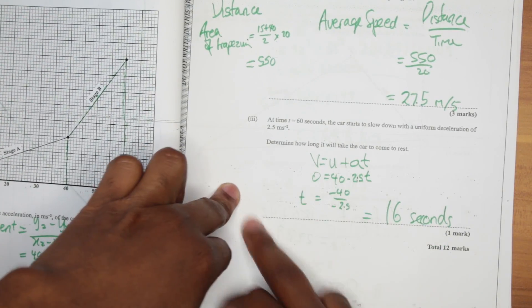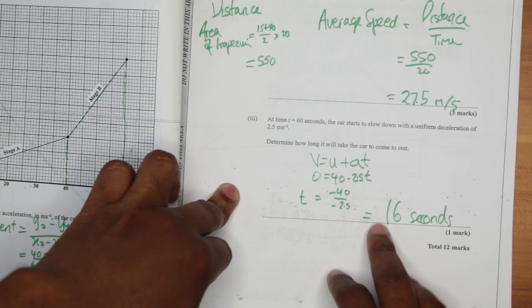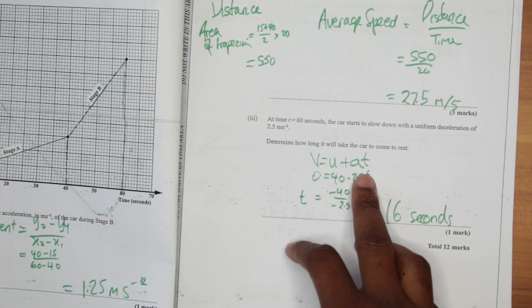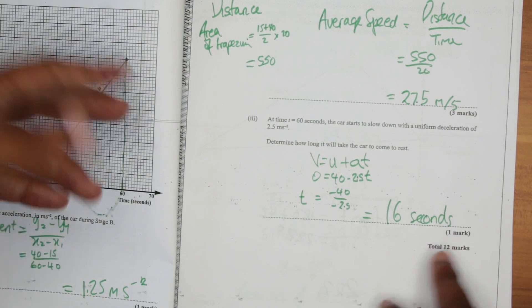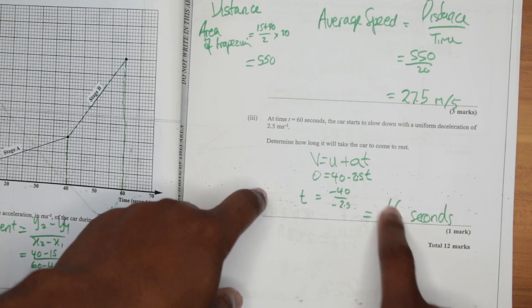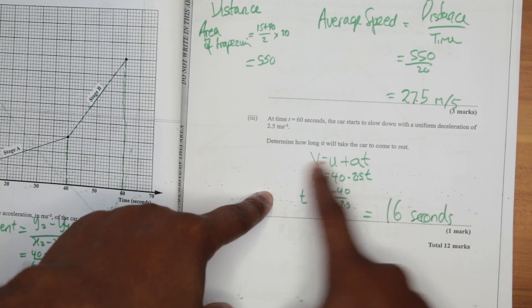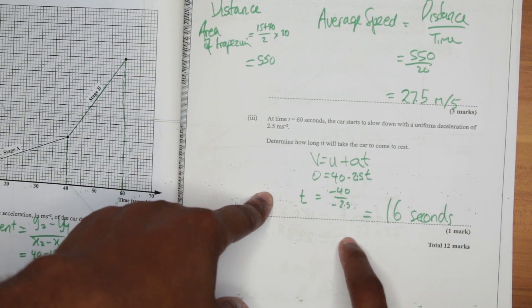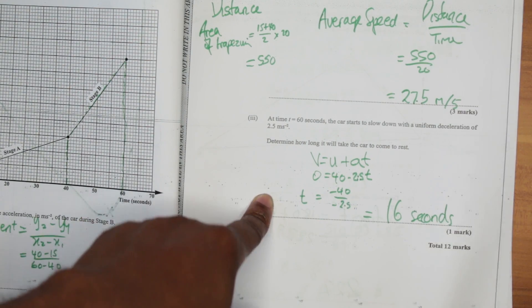And then, this part was weird. It's only one mark though. I used the equation V is equal to U plus AT but you could have used some common sense to figure it out as well. But this was probably this right here. This one mark was the hardest one mark to get in the entire paper if you didn't know about it. To get the time. 16 seconds.